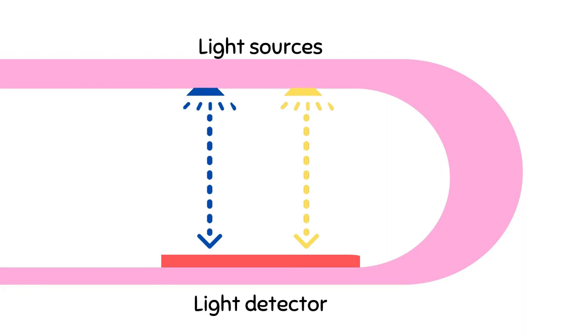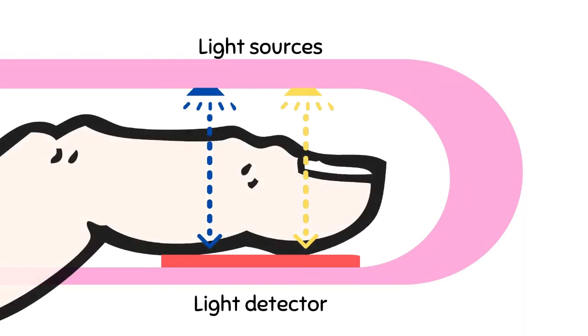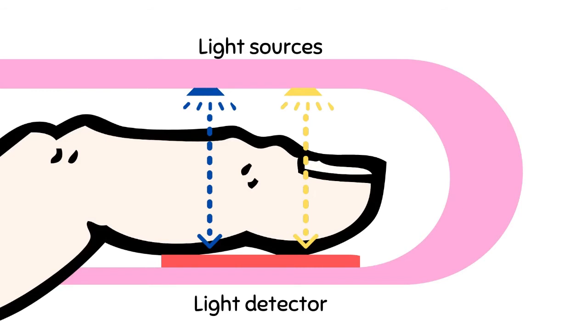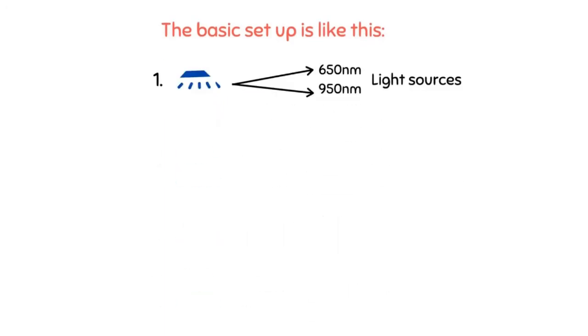We also need a detector that will detect these two lights that come through the tissue of, say, our finger from the two light sources. The basic setup is like this: a 650 nanometer LED light source, a 950 nanometer LED light source, and a detector that detects both lights coming out of the tissues.